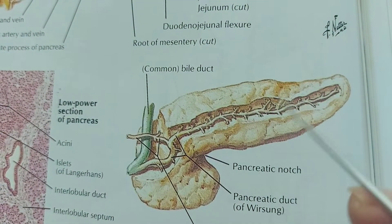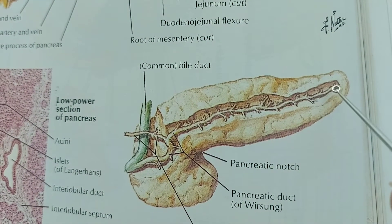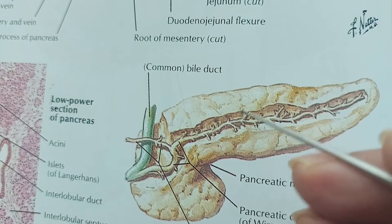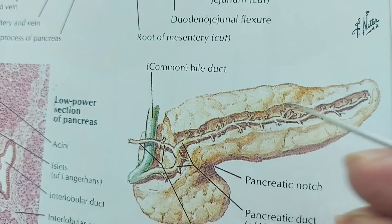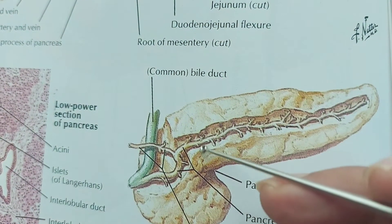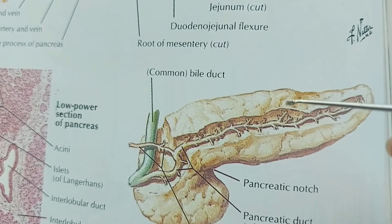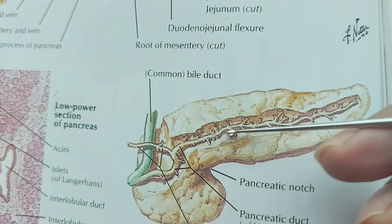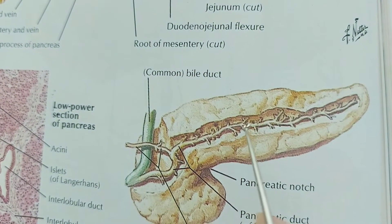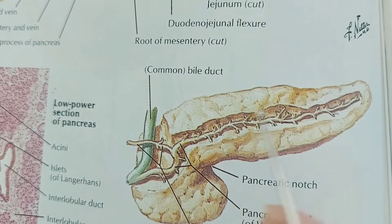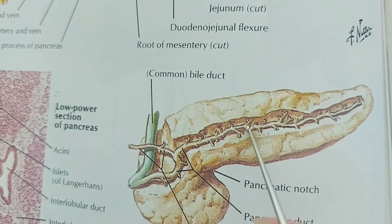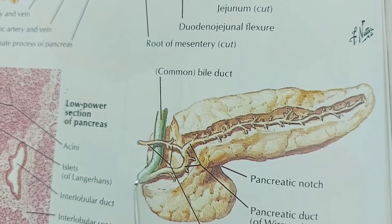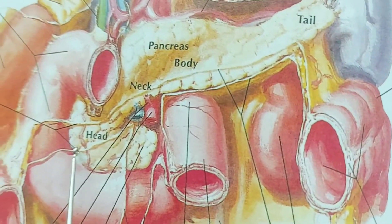The enzymes secreted by the exocrine pancreas are collected through ducts. This is the main pancreatic duct, which has an appearance resembling the bone of a fish — specifically a herring — so it is known as the herring bone appearance. All exocrine secretions are collected through this duct.